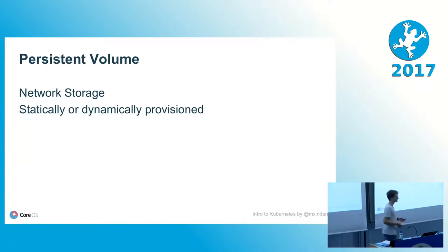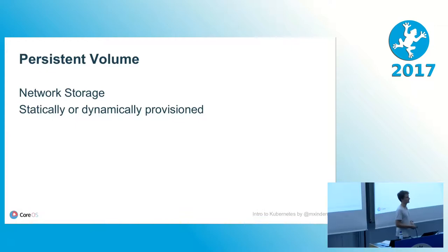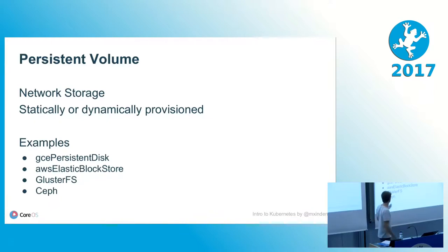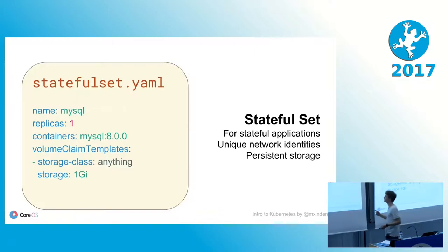That's the main idea for running stateful applications on Kubernetes. Kubernetes introduces different concepts here. First, persistent volumes — stateful data has to be saved somewhere. That would be network storage, either statically or dynamically provisioned. The idea is either you give Kubernetes a bunch of disks, or if you're running on a cloud provider, Kubernetes knows how to spin up new disks on AWS, GCE, etc. — there are drivers and a huge community around that. We also have a new concept: not deployment YAMLs but StatefulSet YAMLs, with key takeaways being unique network identities and persistent storage.